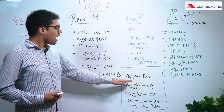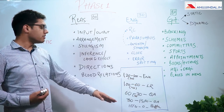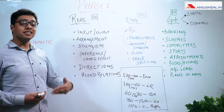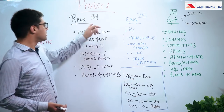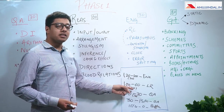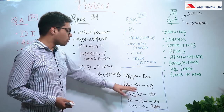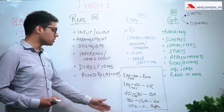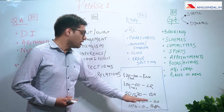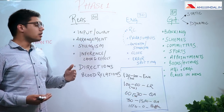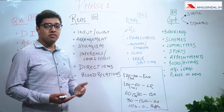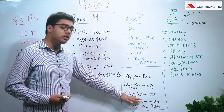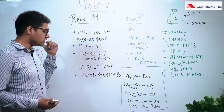Then comes logical reasoning. A similar logic applies — in quantitative aptitude you are doing mundane calculations, but logical reasoning forces you to actually think a lot, and it is a good chunk of 60 questions. So logical reasoning demands a good amount of time — 40 minutes — and sitting second on the list is appropriate. Then comes quantitative aptitude, because the level of difficulty in the paper has been very high, so you do need to give it a good amount of time.